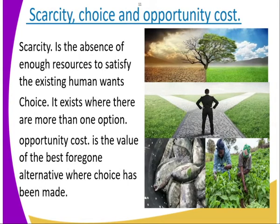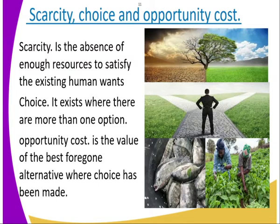Now we go to scarcity, choice, and opportunity cost. Scarcity is the absence of enough resources to satisfy existing human wants. For example, fish is not adequately available everywhere to satisfy human wants. Looking at the nature of the landscape, one side is dry and the other has water, so the things necessary for a green environment are scarce.